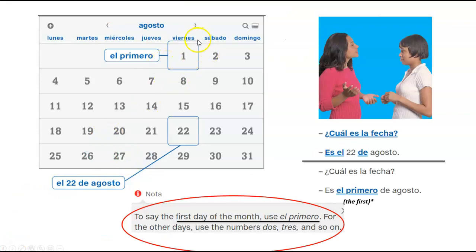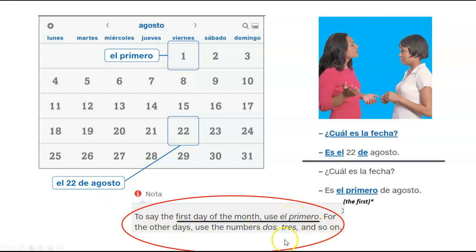When you have the first of the month, you would say el primero. Viernes es el primero de agosto. And to say August 22nd, you actually say the 22nd of August — el 22 de agosto. To say the first day of the month, use el primero, the first. For the other days, just use the numbers: dos, tres, and so on — el primero, el 22, el 23.